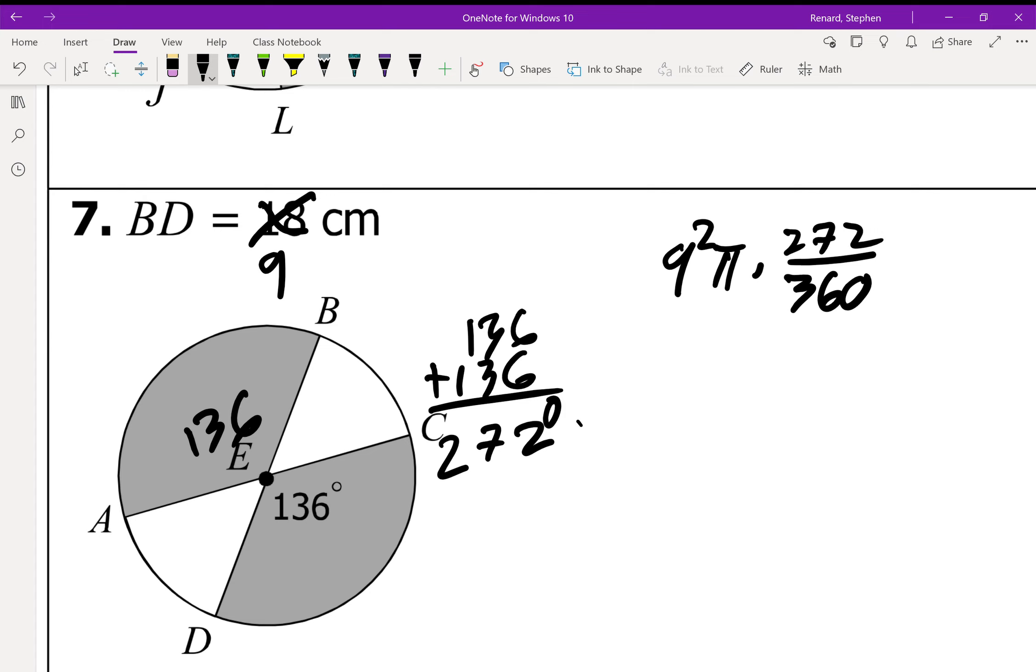So, we're going to go 9 squared times pi times 272 divided by 360. Again, that 9 squared pi or 81 pi is the entire area of the circle. And then the 272 divided by 360, that's the area that has been shaded. Hey Google, what is 81 times pi times 272 divided by 360? 81 times pi times 272 divided by 360 is approximately 192.27.